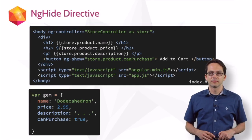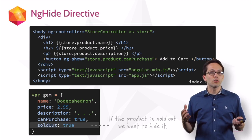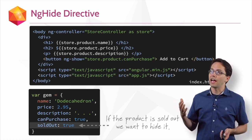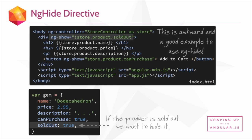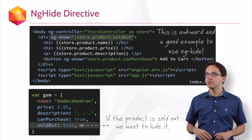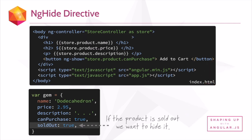Let's add another property to our gem — we'll call it soldOut. If soldOut is true, we don't want to show the product on the page at all. So we're going to use the ngShow directive again: ngShow equals store.product.soldOut. Now there's another way we can do this which is a little bit more readable by using the ngHide directive: ngHide store.product.soldOut. It's saying hide this product when we're sold out, and the HTML is a little more readable.